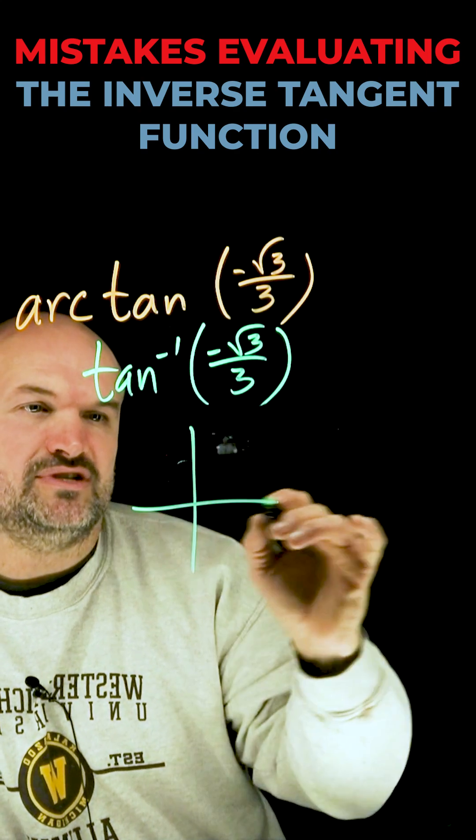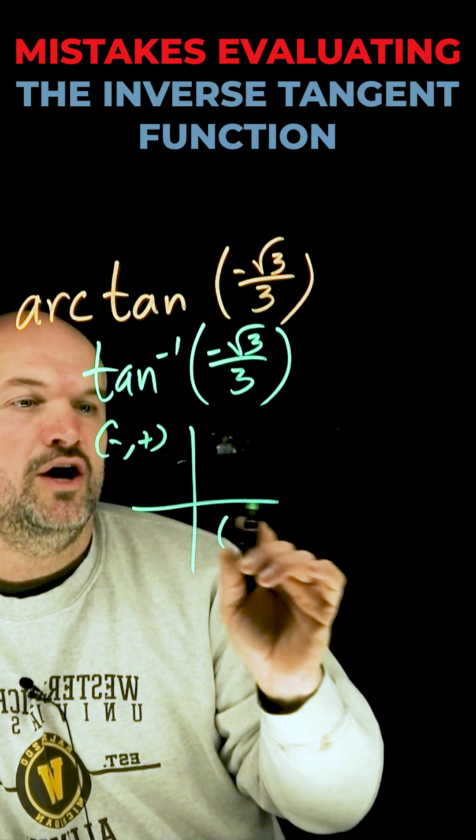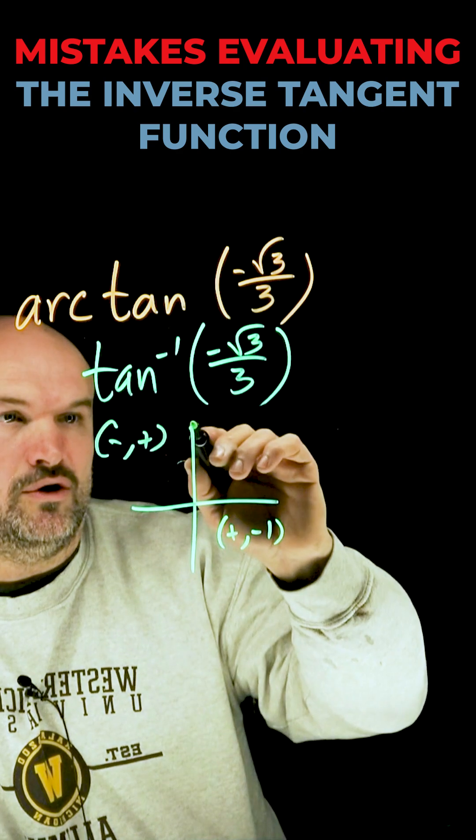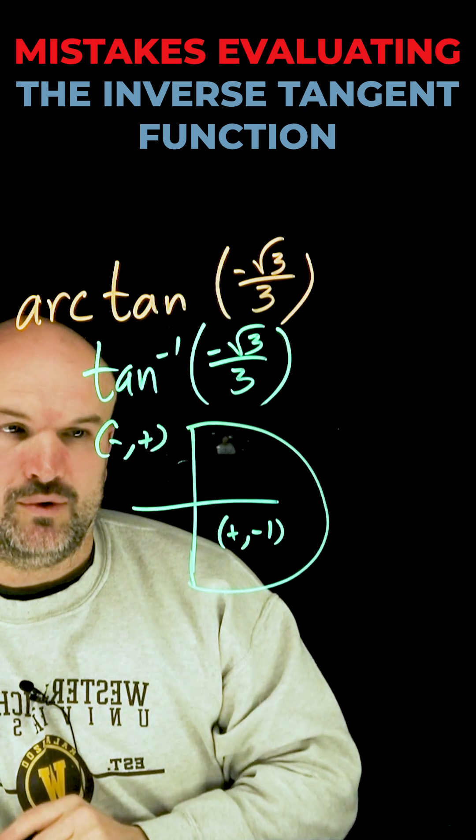Or that ratio could be negative in the second quadrant, as well as in the fourth quadrant. But if you remember the restrictions on tangent, or the inverse tangent function, that is only going to be contained in the first and in the fourth quadrant.